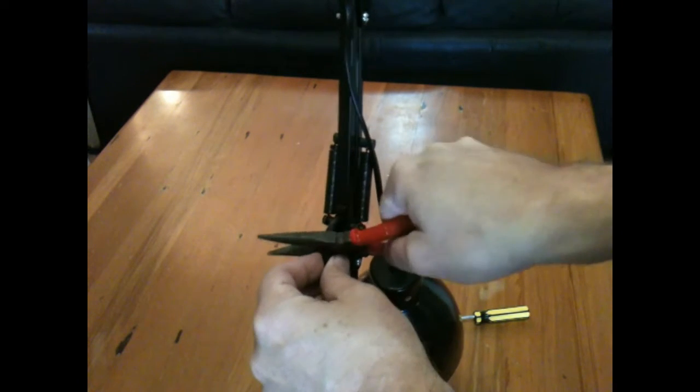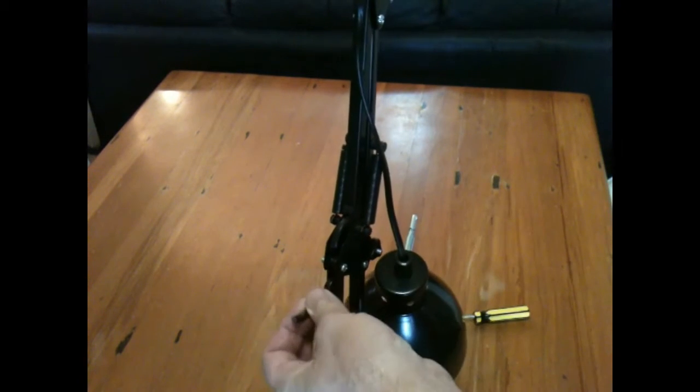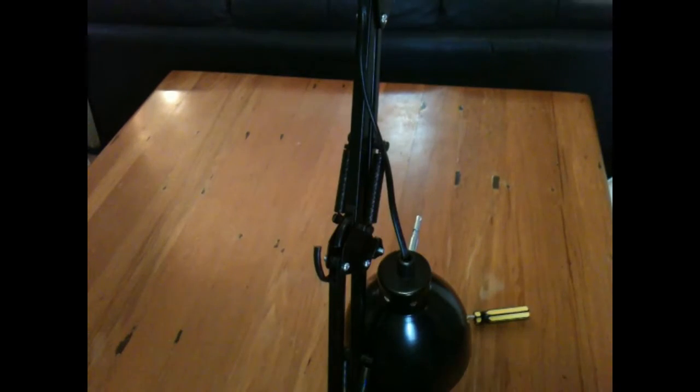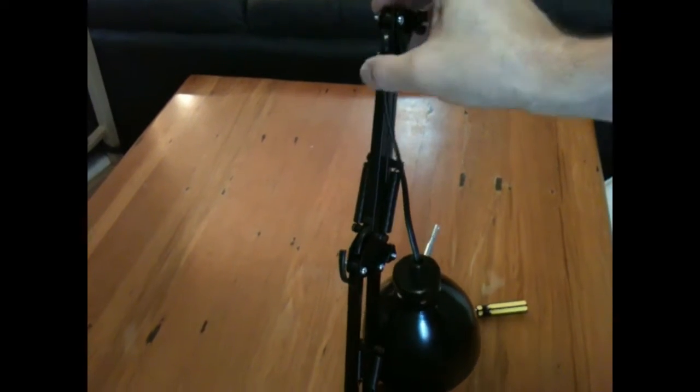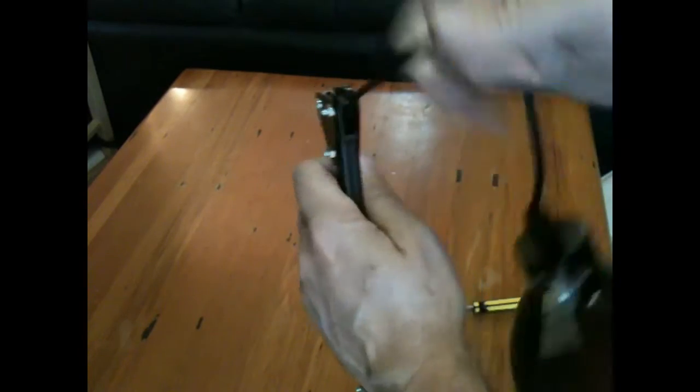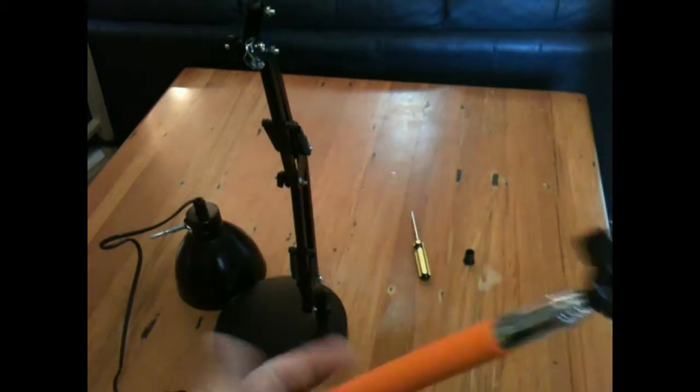I don't need the light part of the lamp or the power cord so I'll just cut them off. Originally I was going to save the light and the cord but they were built into the base so I really just had to cut the wire.